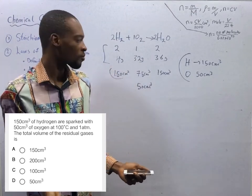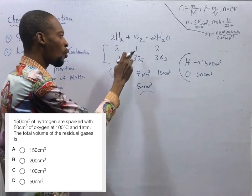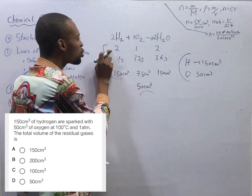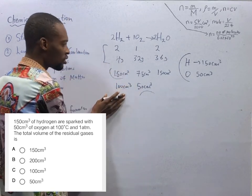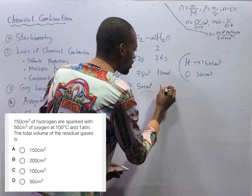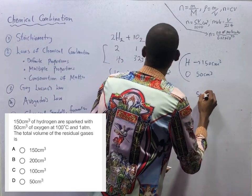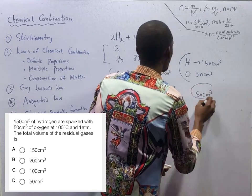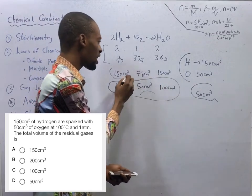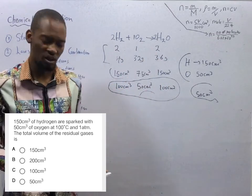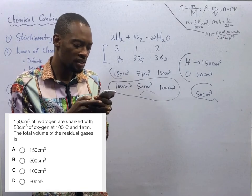So, what should be the right thing? Since we are only given 50 cm³ of oxygen, which means 1 is 50 cm³, 2 should be 50 times 2, that is 100 cm³. 2 here should also be 100 cm³. Therefore, 50 cm³ of H₂ will not react. This is what we need for the reaction according to the balanced equation.